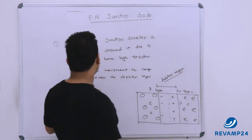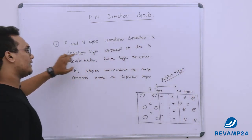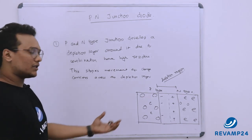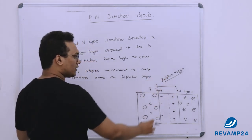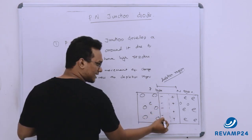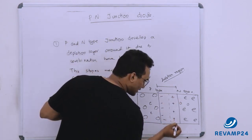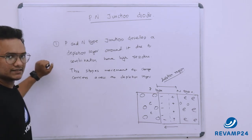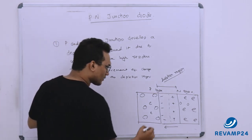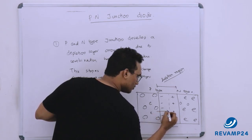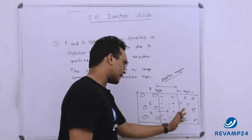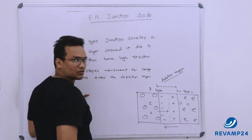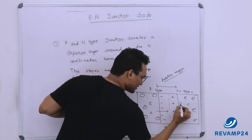In the depletion region, electron and hole pairs recombined at the junction due to the force of attraction between them. The P-side lost holes so it is negatively charged, and the N-side is positively charged. This creates an electric field and a barrier potential. Previously, holes were able to come to the junction and combine with electrons. Now, say a hole has affinity towards the electron and comes towards the junction.